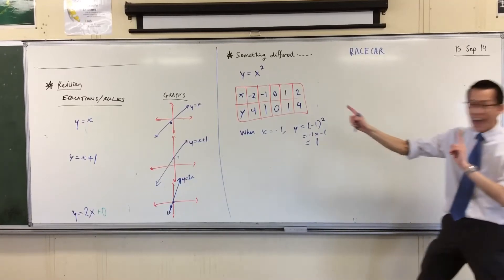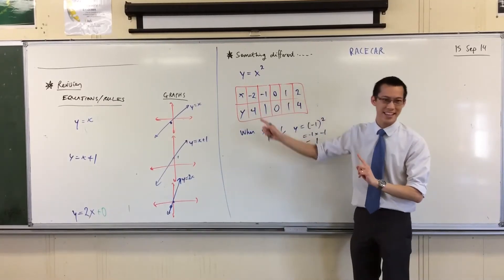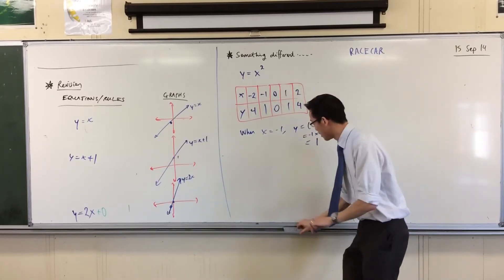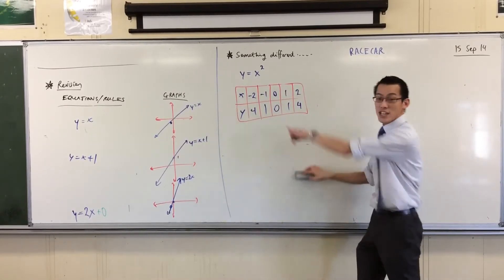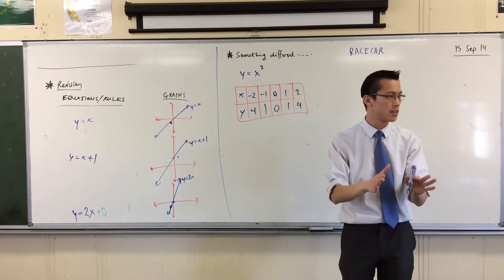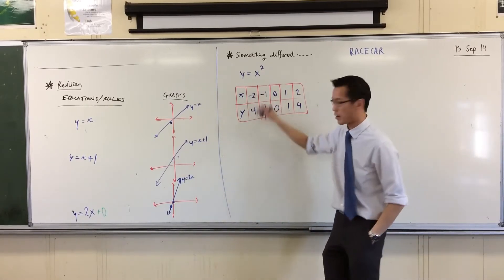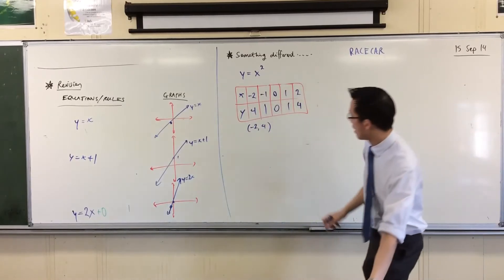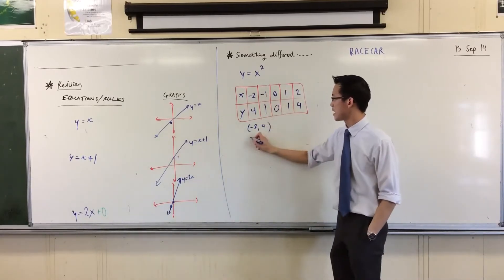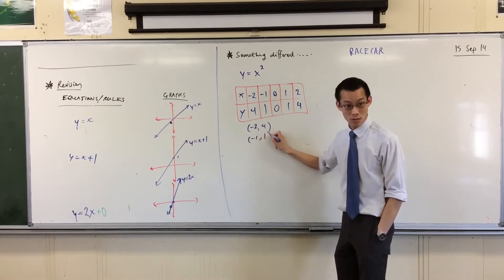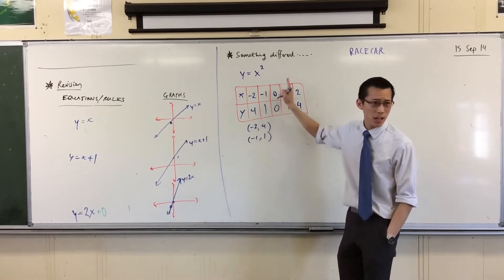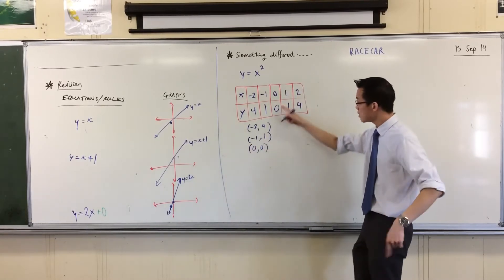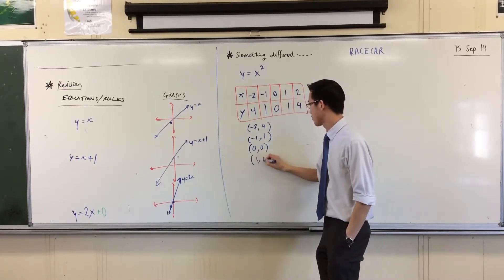So now we have some points here. Let's list them out. Each of these pairs of numbers gives us some coordinates. So this first one here is negative 2, 4. Then you've got this one here: negative 1, 1. What's this one here? This is a special one — it's the origin. 0, 0. And then you can keep on reading off from there.